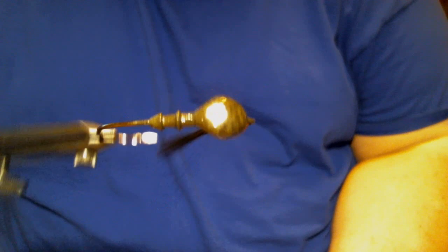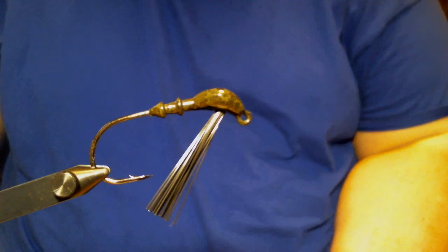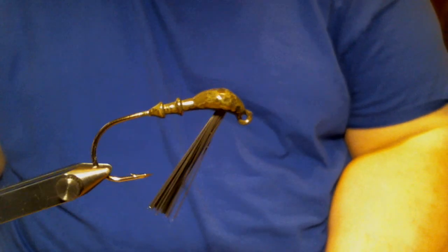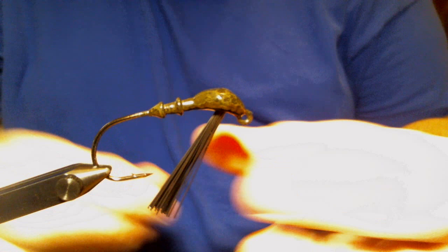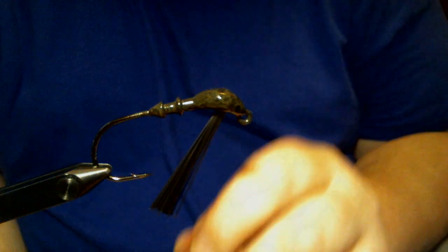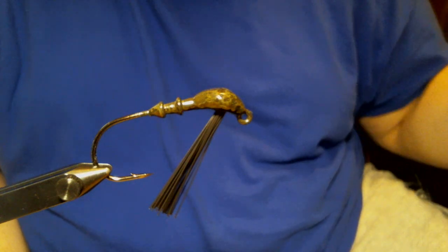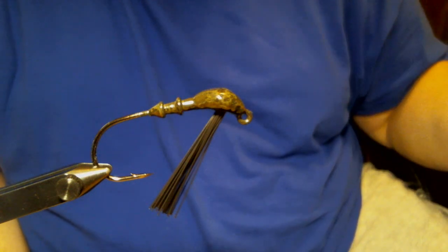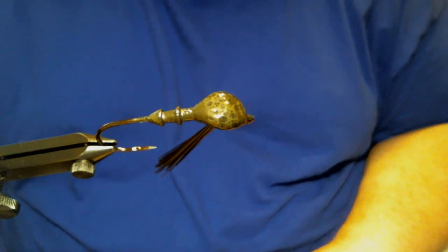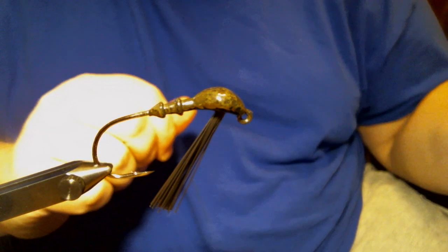This is a 1.5 ounce Arky head with a 5-0 TROKAR TK800 hook. I wire tied a swim jig and showed you how I do that. That was a little bit different. I'm going to show you how to do it in the vise, or at least how I do it in the vise with two colors. The color on this jig is Green Pumpkin Camo, and that's the type of pattern we're going to do.